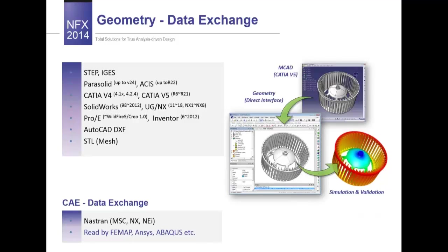Let's take a look at geometry data exchange. For input we can use the most popular formats like STP, Parasolid, ACIS, CATIA version 4 and version 5, SolidWorks files, ProEngineer, AutoCAD, and STL. For export we can export only XT — the Parasolid file format. For CAE data exchange we can currently use only NASTRAN format, but very soon FEMAP and ABAQUS will be implemented.